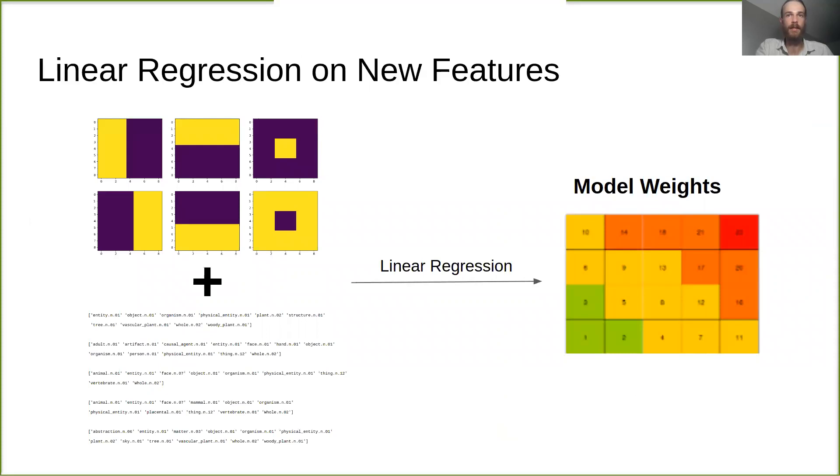As before, we fit a unique encoding model for each of the two new sets of features, as well as a third model incorporating both sets together.